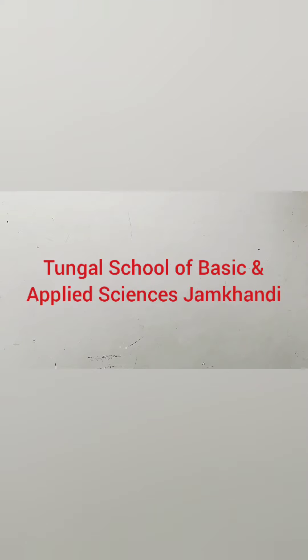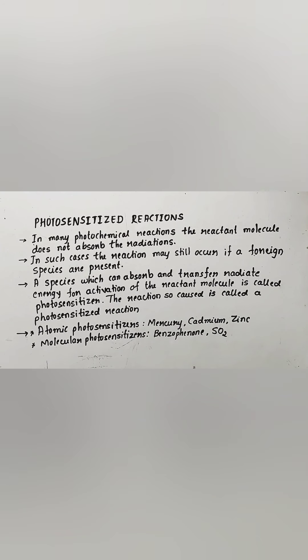Welcome back. In today's class we are going to discuss the last bit of the topic: photosensitization reactions. Certain reactions are not sensitive to light — in many photochemical reactions the reactant molecule does not absorb the radiations. In such cases the reaction may still occur if a foreign species is present, which can absorb and transfer its radiated energy for activation of the reactant molecule. These foreign materials are called photosensitizers, and the reaction brought about by them is called a photosensitized reaction.